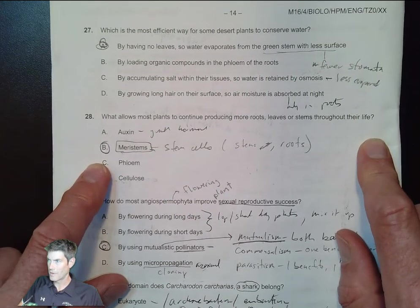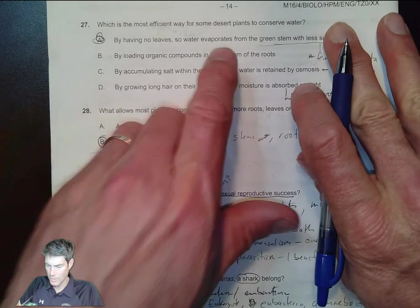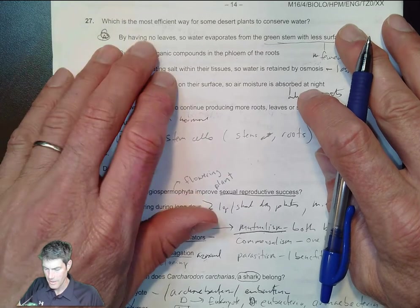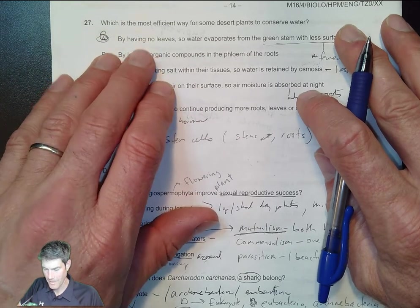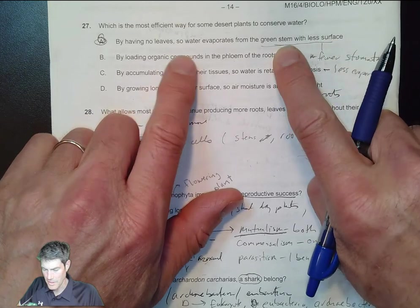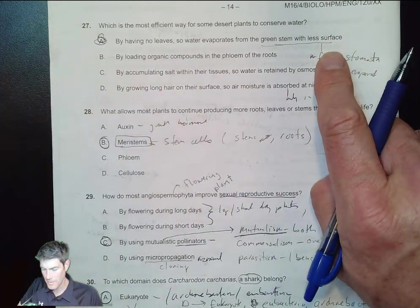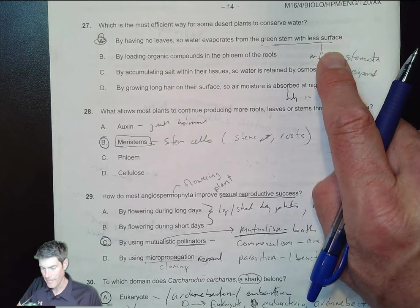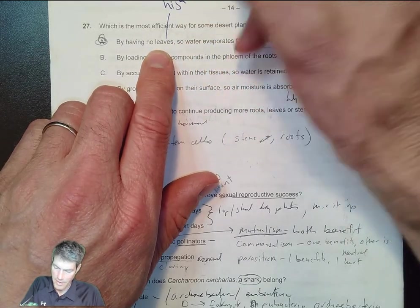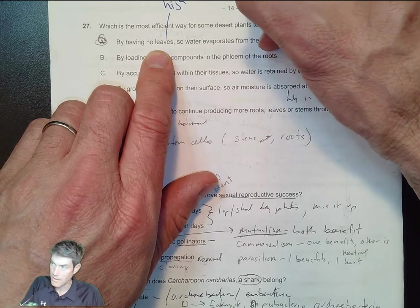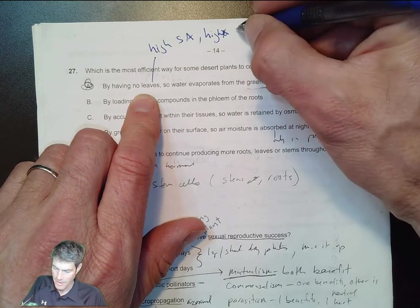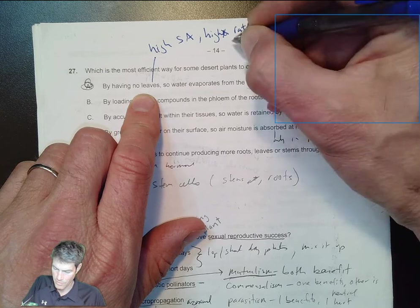Desert plants have to conserve water. If they have no leaves, there's less surface area. The stem is green, but remember not all desert plants - some desert plants do have leaves, but leaves have high surface area, so you can have a high rate of transpiration because of that.